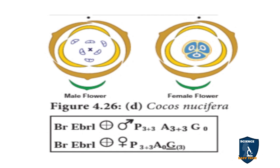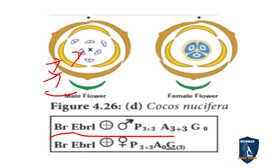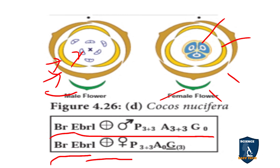For Cocos nucifera (coconut), both male and female flowers are shown. Bract present — BR; no bracteoles — EBRL; actinomorphic. Male flower: perianth three plus three in two whorls — P(3+3); androecium three plus three — A(3+3); gynoecium zero — G0. Female flower: perianth three plus three; androecium zero — A0; gynoecium three, superior — G(3).